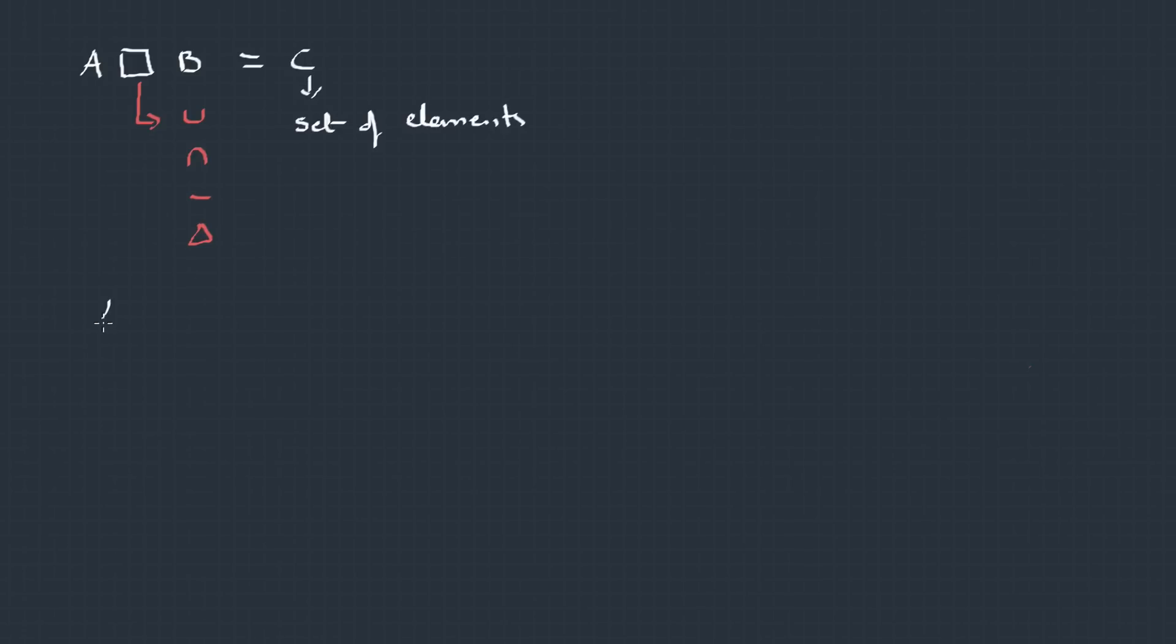There's one more set operation called Cartesian product or simply product, where the output is a set of ordered pairs. So before we jump into the product, let's first learn about ordered pairs. An ordered pair is a group of two elements wrapped in a bracket like 2, 3, 5, 8, etc.